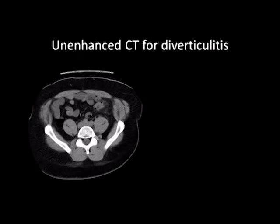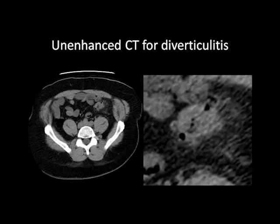Here is an example of an unenhanced CT performed in a patient with diverticulitis. In the patient's left lower abdomen, a segment of colon is seen with a diverticulum. In fact, multiple diverticula are present around the periphery, notable as small sacs. Surrounding this segment of colon, there is inflammatory fat stranding, just as in the case of appendicitis presented earlier.